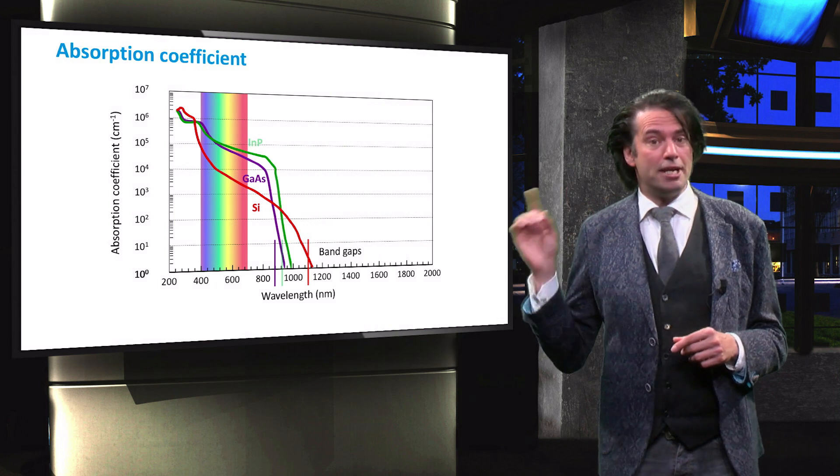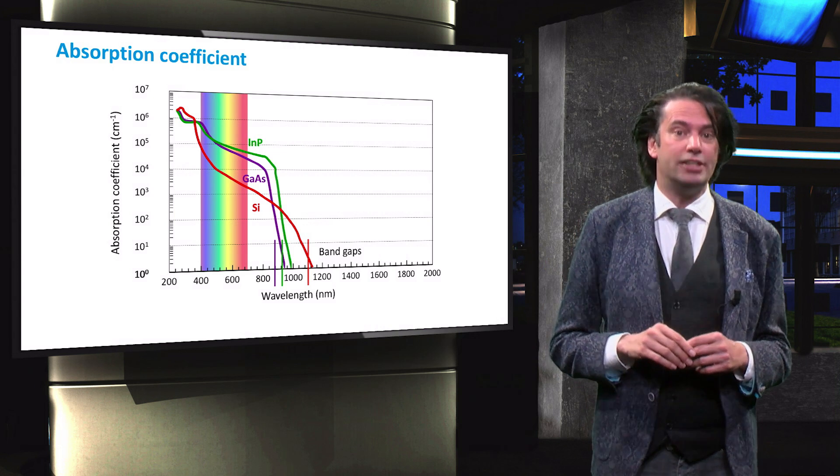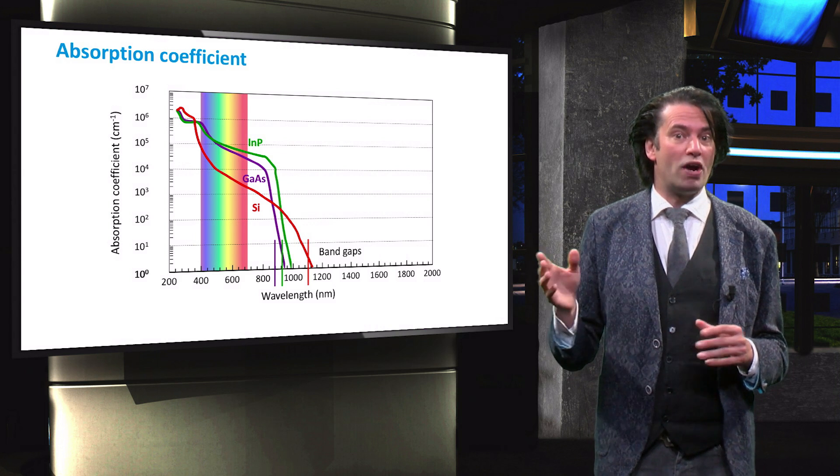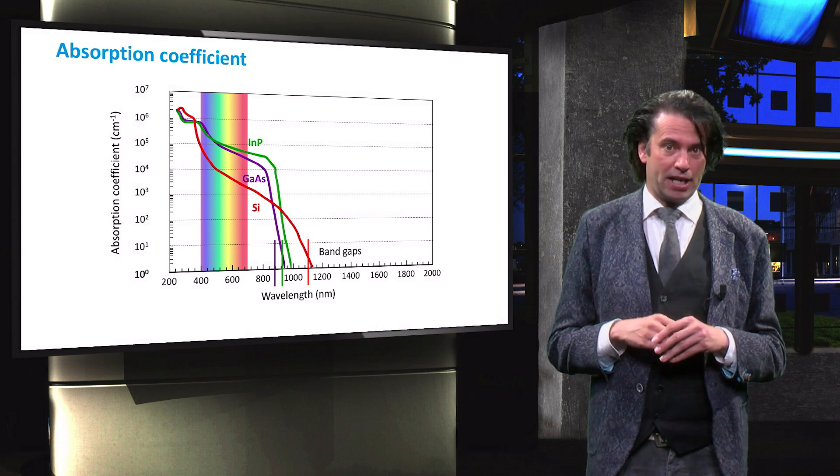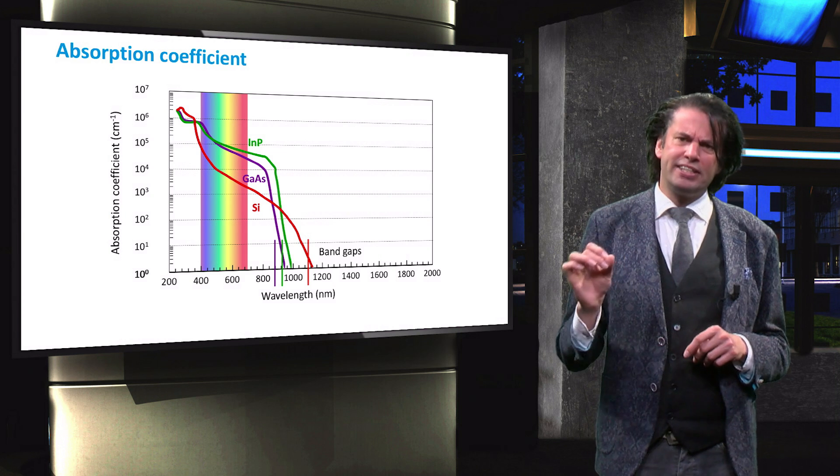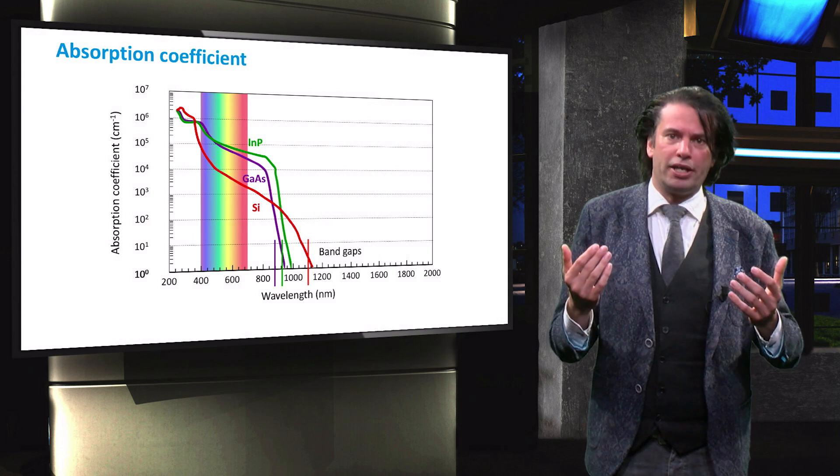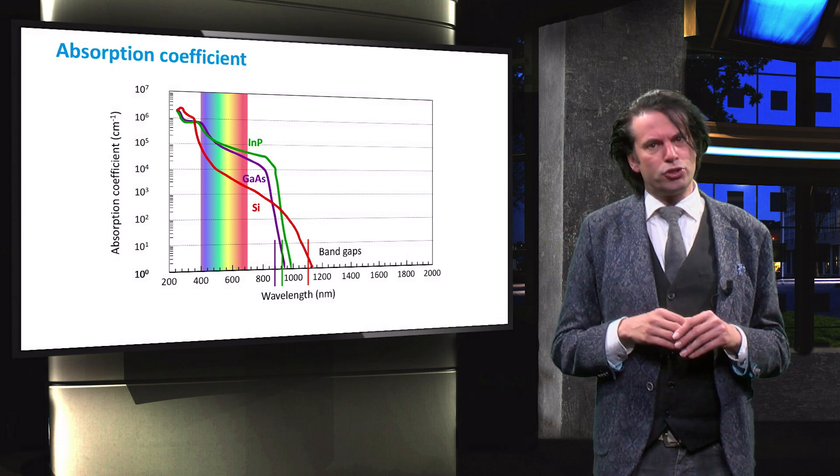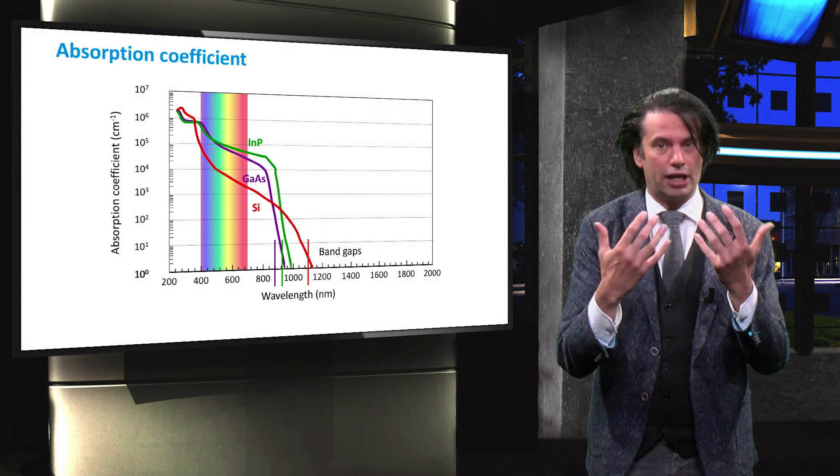The same is true for indium phosphide, which has a direct band gap corresponding to a wavelength of 925 nm. This means that for a similar absorber layer thickness, the III-V materials will absorb a larger fraction of the incident light.